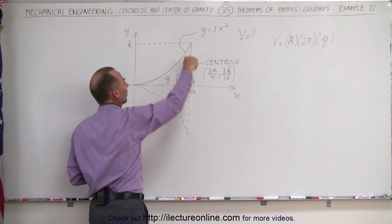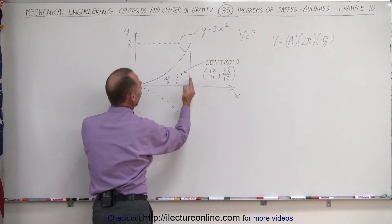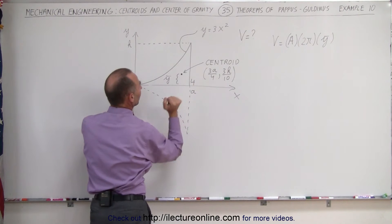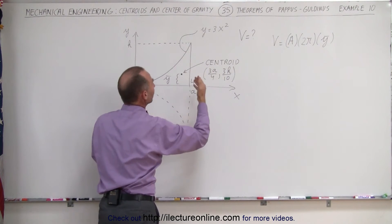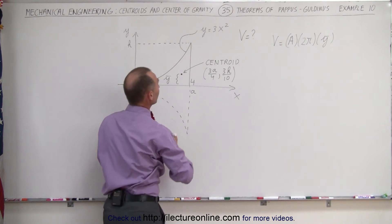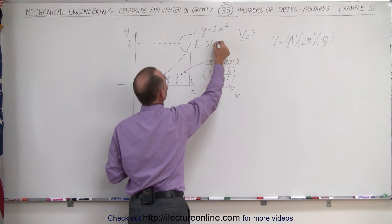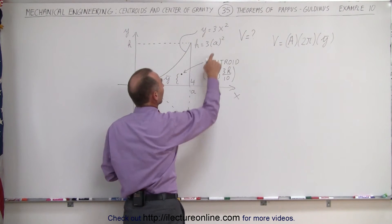For parabolic shapes like this, the centroid is always equal to, for the x-coordinate, 3a divided by 4, a being the distance from the vertex right here at the origin to this point right here, and h would be the height from there to there. The height can be found by plugging that into the equation. h is equal to 3 times a squared.